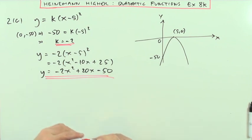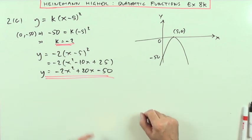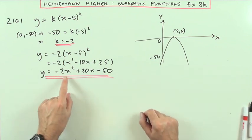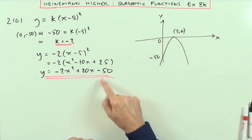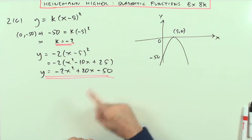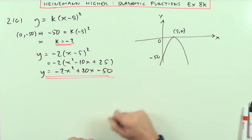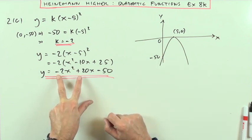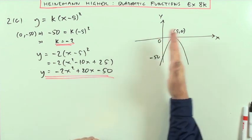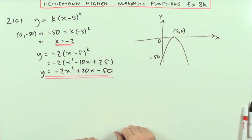Once again, I'll check the signs against the graph. It's a negative X squared term, so it should be upside down — and it is. The constant is negative 50, and it cuts the Y axis at negative 50. The signs are opposite for the X terms, which means the axis of symmetry should be on the right — and it is. So that's question 2.